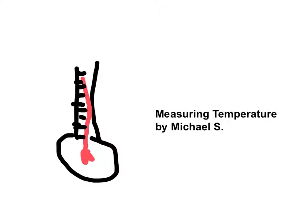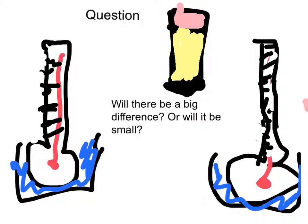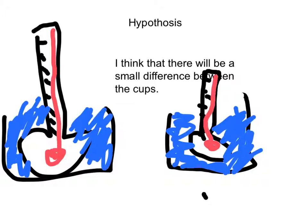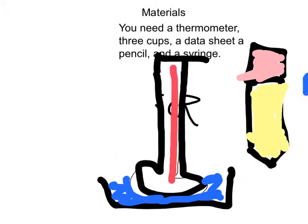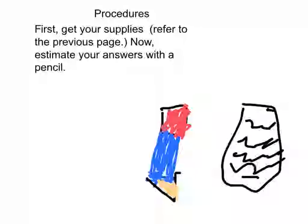By Michael S. Question: Will there be a big difference or will it be small? I think that there will be a small difference between the three cups. You need a thermometer, three cups, a data sheet, a pencil, and a syringe.